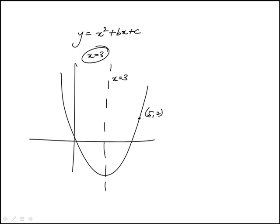Question is, what is the value of c? So, the axis of symmetry, let's see, so we know it passes through (5, 2), x equals 3.